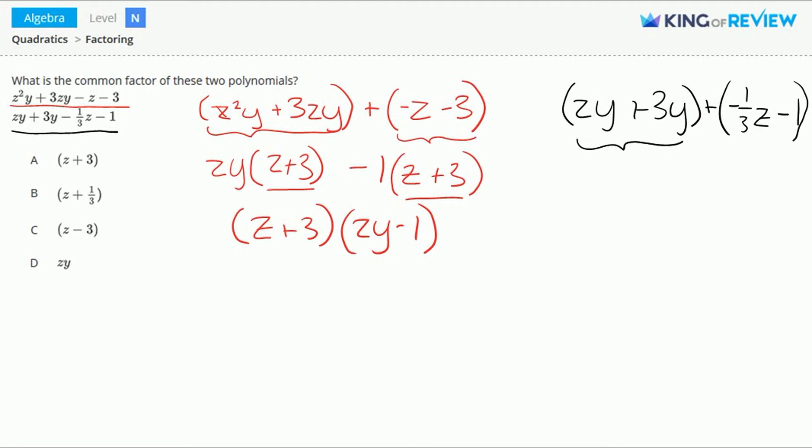Let's start by factoring this first grouping. We can factor out a y. This gives us y times z plus 3. And in the second grouping here, we can factor out a negative 1 third. So minus 1 third times z plus 3.